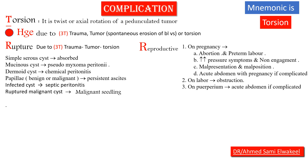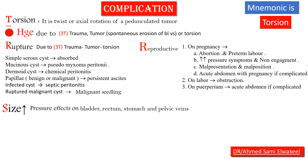R also covers reproductive complications: in pregnancy, ovarian cysts can lead to abortion, preterm labor, increased pressure symptoms, non-engagement, malpresentation, and malposition. Complications during labor include obstruction, and in the puerperium they lead to acute abdomen if complicated. S for size — when size increases, pressure effects appear on the bladder, rectum, stomach, and pelvic veins.